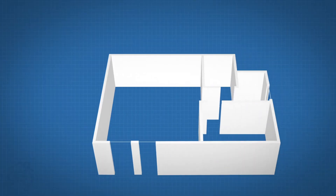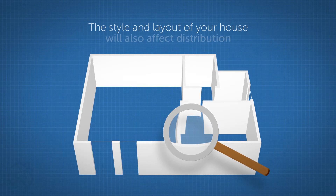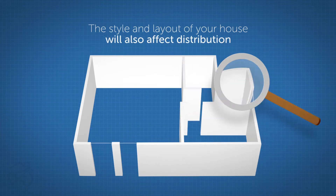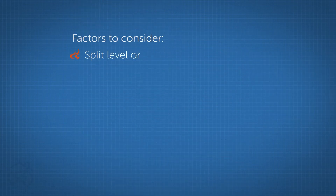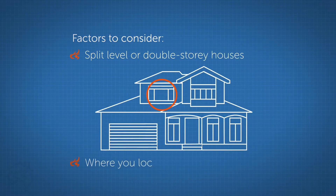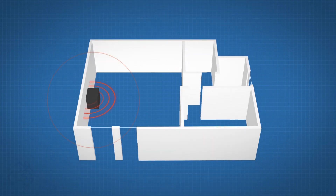The style and layout of your house will also affect the unit's ability to distribute heat. Factors to consider include split level and double storey houses and where you locate your fire in the house for better heat distribution. The more central the location of your fire, the better.